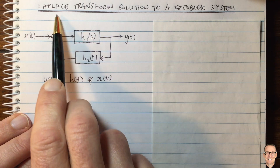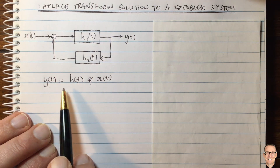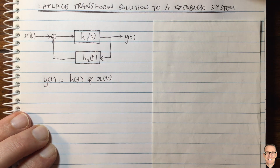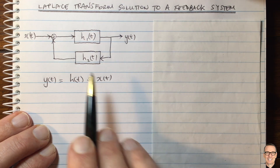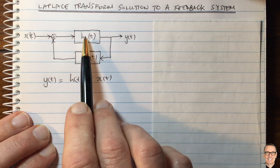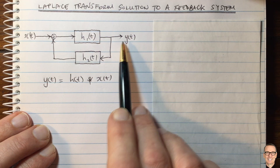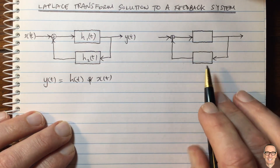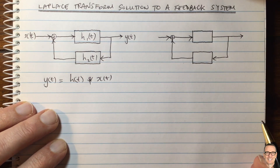So let's use the Laplace transform property where a convolution in the time domain is the same as a multiplication in the Laplace domain. We're going to do a transformation of each of the elements of this linear system, and then we'll be able to handle it much more simply using the Laplace domain.